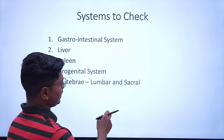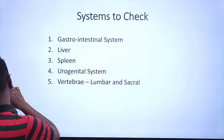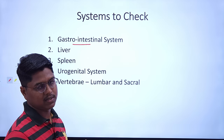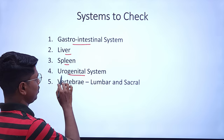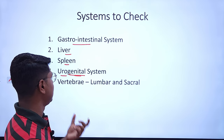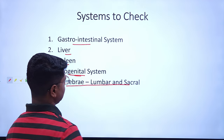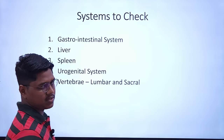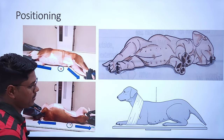In the abdominal radiograph, we check the GI system: stomach, small intestine, large intestine, cecum, colon, and rectum. We also assess the liver, spleen, urogenital system — including kidneys, ureter, bladder, urethra, and the female genital system (uterus). Additionally, we assess the lumbar and sacral vertebrae. We will see multiple normal radiographs to become thorough in interpreting the abdomen.